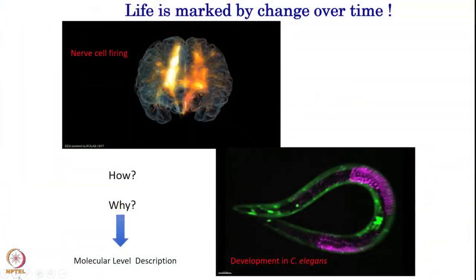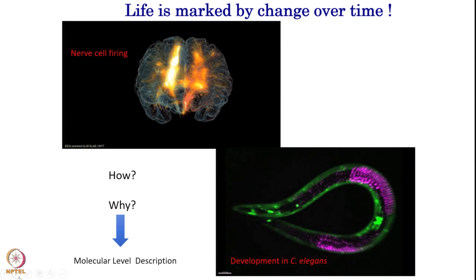Life is actually marked by change over time. If you look at any event that is happening — like a nerve cell firing — something changes over time. Even in C. elegans, a small organism, something continuously changes. You can probe that by putting some dye on a protein or gene and see how it is changing. If we understand the how and why of these changes in life, we understand how life evolves, how life moves, how life develops. That is the importance of dynamics, which is encoded in time and motion.